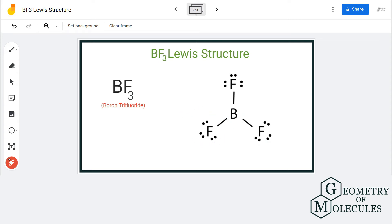But you might be wondering, what about boron? It just has six electrons because it is sharing all three of its electrons with fluorine atoms. Well, boron is an exception to the octet rule and it can function with six electrons in its outer shell. So it's okay if it doesn't have eight valence electrons.